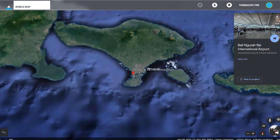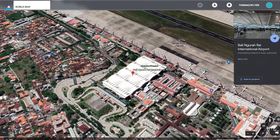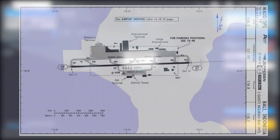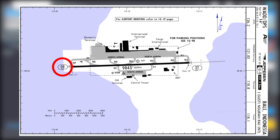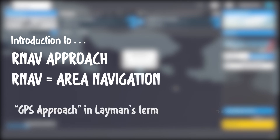Bali is located at the south-eastern side of Indonesia Island and it has a single runway, namely runway 09 and runway 27. For the approach today we are going to conduct the RNAV approach into runway 27. RNAV stands for area navigation, so in layman's terms you can call this a GPS approach.